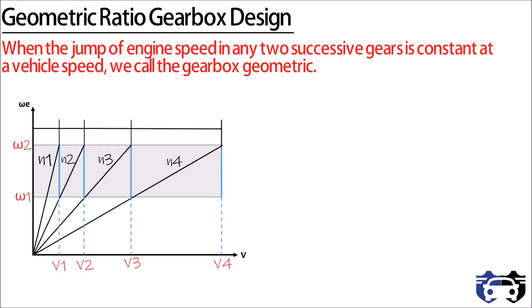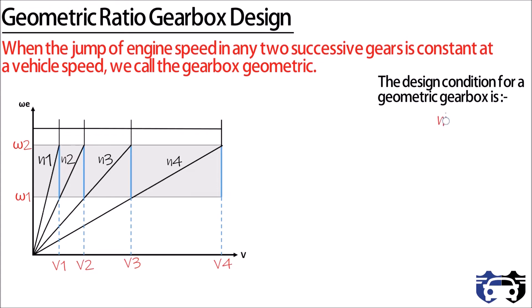That is, on increasing the RPM of the engine in first gear up to omega 2, then decreasing it to omega 1, and at that point shifting to second gear, then again increasing to omega 2 — this continues while shifting through the other gears. The design condition for a geometric gearbox is: ni equals ni minus 1 divided by CG.